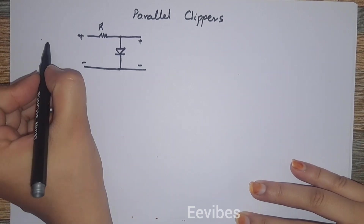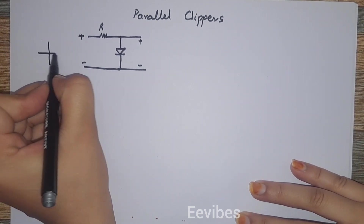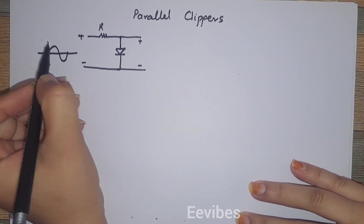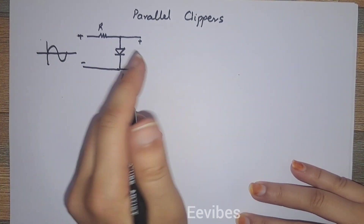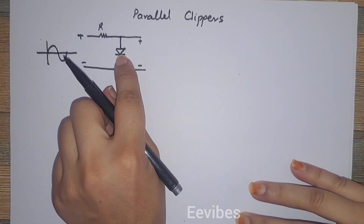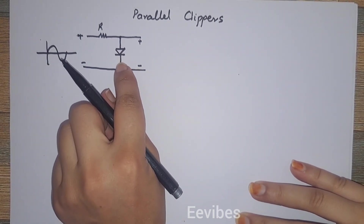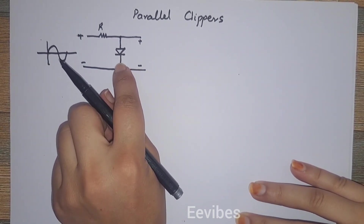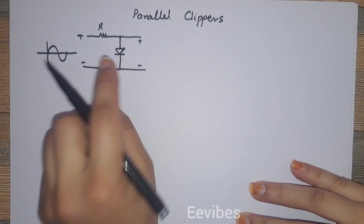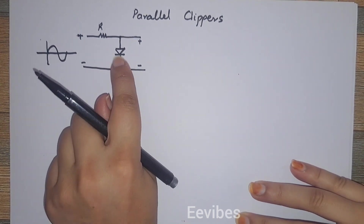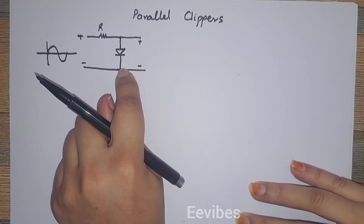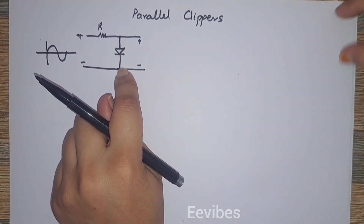In this circuit there is actually a current limiting resistor. Considering the operation of this parallel clipper circuit, we can see that it is not a biased parallel clipper because there is no biasing present — there is no battery connected in series with the diode.